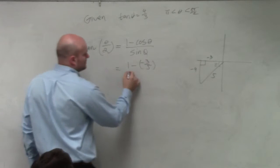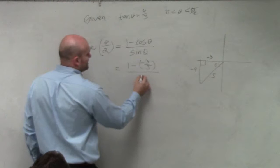I'd make sure you guys use parentheses here. Divided by sine, which would be negative 4 over 5.